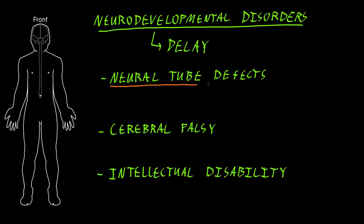Neural tube defects involve syndromes that occur with abnormal closure of the neural tube. When that part of the ectoderm is rolling up into the neural tube, if something interferes with that process, there's a defect in the formation of the neural tube. What we most commonly see when the neural tube doesn't close properly is an abnormality of the spinal cord, with a few different versions of this, and sometimes abnormalities of the brain as well.